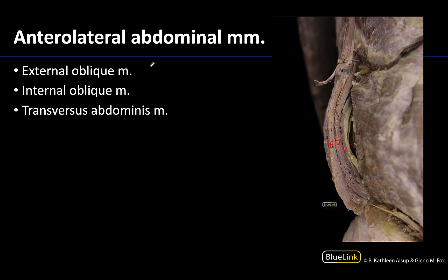Similar to the external intercostals, the external oblique muscle fibers are moving inferior medially, whereas the internal obliques are running perpendicular to that. The deepest transversus abdominis muscle fibers are more transverse, though some of them can look similar to the internal oblique fibers as well.